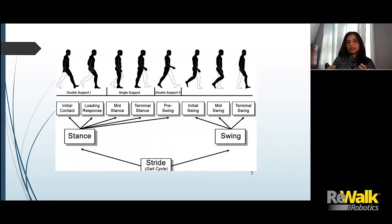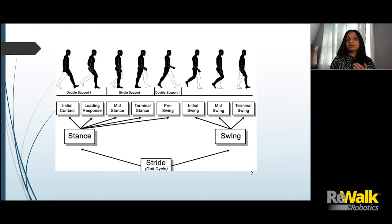Looking at the gait cycle, we have different phases — the stance phase and the swing phase. The stance phase starts with initial contact. It used to be called heel strike, but we no longer use that term because initial contact can happen with a variety of different contacts with the surface. It doesn't always have to be the heel, which is why the terminology has changed.